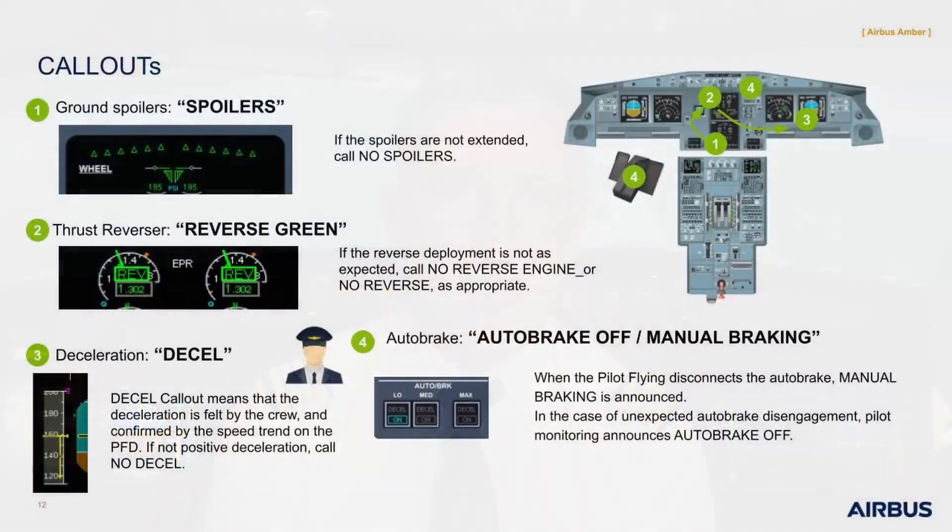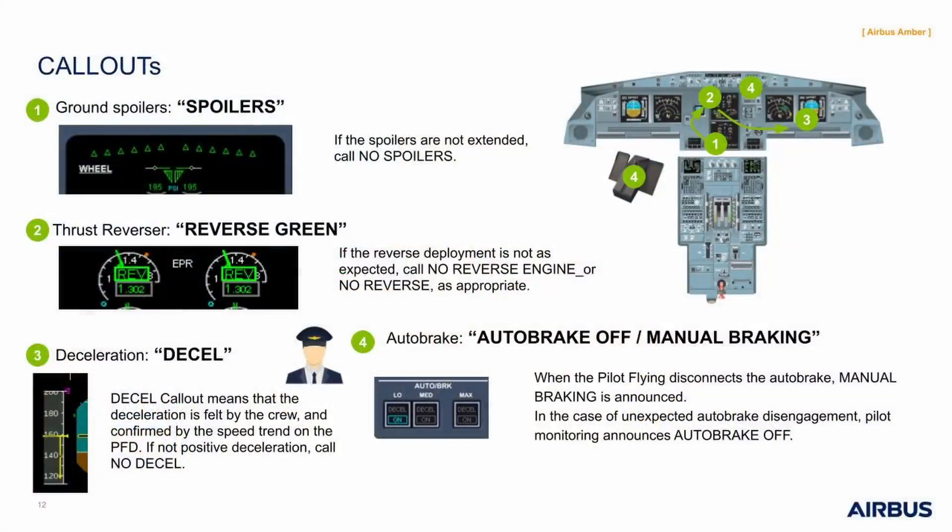Finally, the last call-out is related to autobrake monitoring. When the pilot flying disconnects the autobrake, 'manual braking' is announced. In the case of unexpected autobrake disengagement, the pilot monitoring announces 'autobrake off'. An unexpected autobrake disengagement is detected when the blue light disappears on the autobrake panel without any 'manual braking' call-out from the pilot flying.